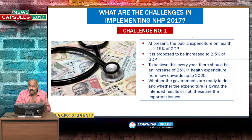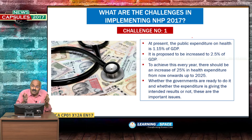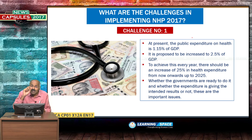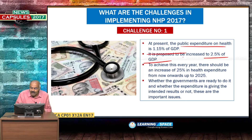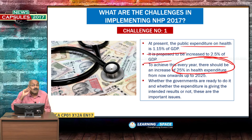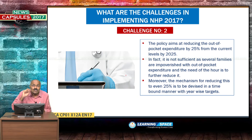Now, what are the challenges in implementing NHP 2017? Challenge number one: public expenditure on health is currently 1.15% of GDP, and to increase it to 2.5% of GDP by 2025, health expenditure must be increased by 25% every year. Whether governments are ready to do it is the million-dollar question.